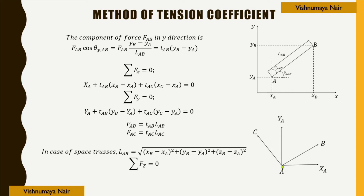Consider joint A where XA and YA are the externally applied loads or reactions, and fab and fac are the forces in members AB and AC. For equilibrium along the x direction, summation Fx = 0: XA + tab·(xb−xa) + tac·(xc−xa) = 0.